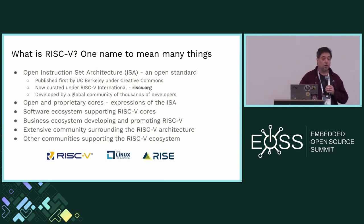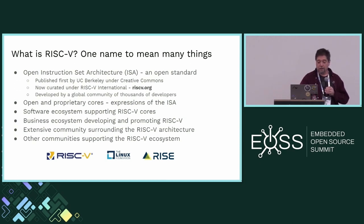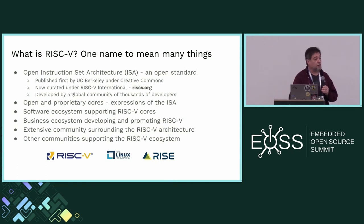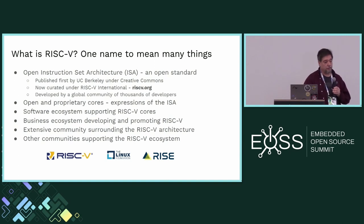There is a software ecosystem supporting these cores, though it is somewhat behind the times — and that is actually going to be the purpose of RISE, which we'll talk about in a few seconds. There is certainly a business ecosystem developing and promoting RISC-V. The RISC-V International membership spans globally across 70 countries. It's roughly one-third in North America, one-third in Asia, and one-third in Europe. I believe there are up to 3,000 members now, including individual members, and roughly 750 corporate members.